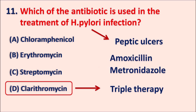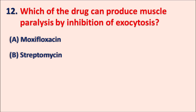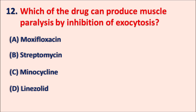These three antibiotics are particularly used to treat H. pylori infection. Tetracyclines can also be used but they are somewhat less effective compared with these three. Question twelve: which of the following drugs can produce muscle paralysis by inhibition of exocytosis? Options are: A) moxifloxacin, B) streptomycin, C) minocycline, D) linezolid.